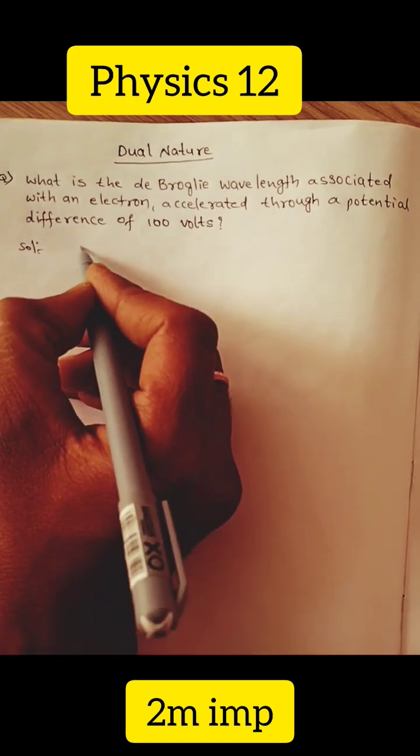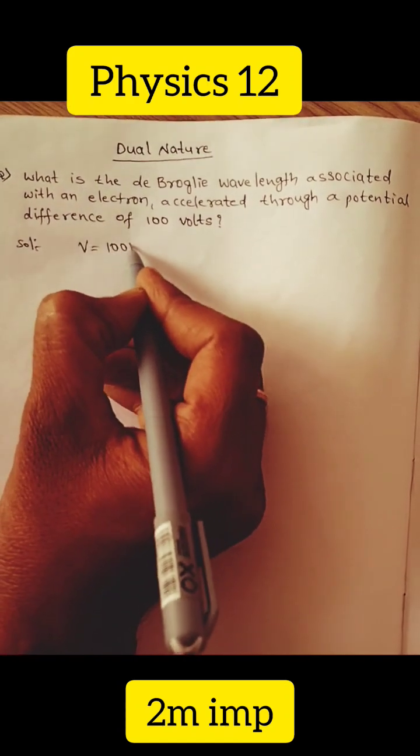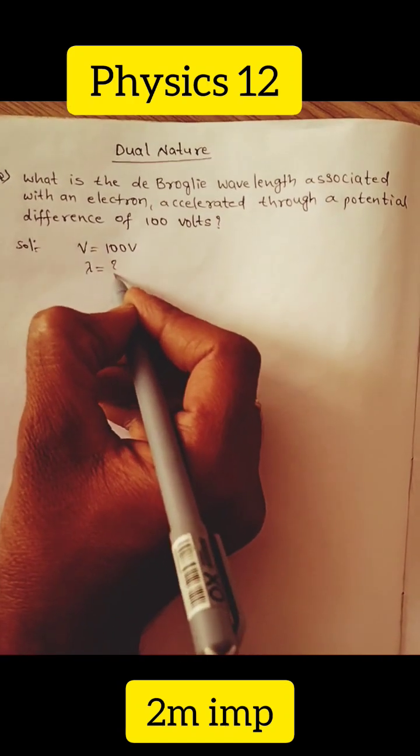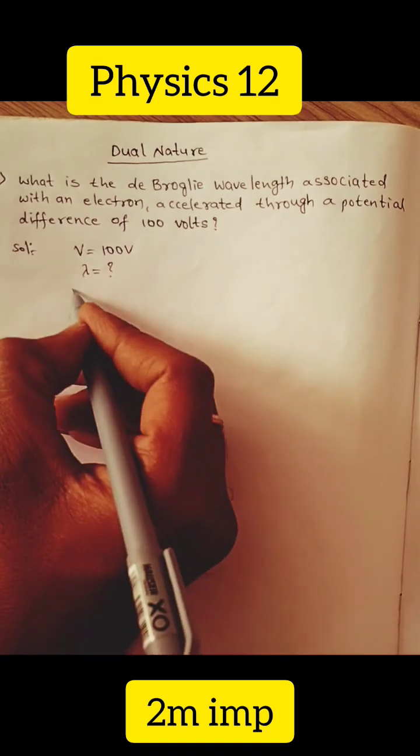So in solution, the given voltage V is equal to 100 volts. So lambda is equal to what? The formula for this is...